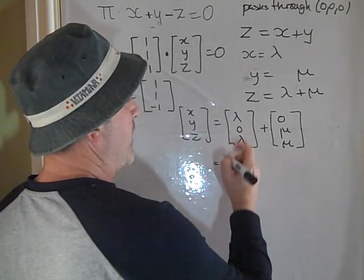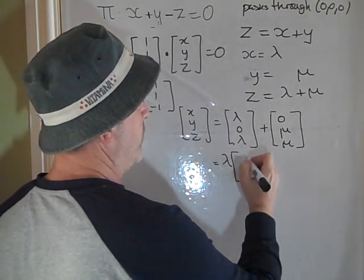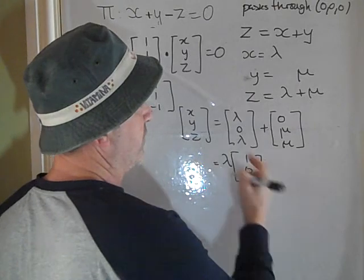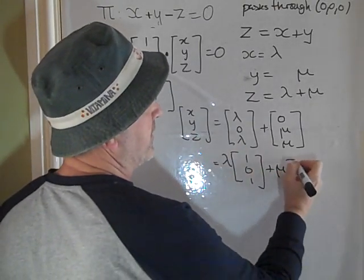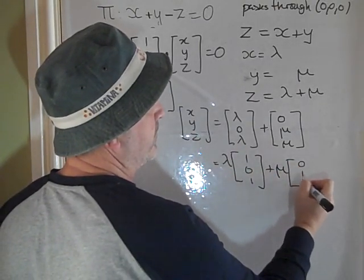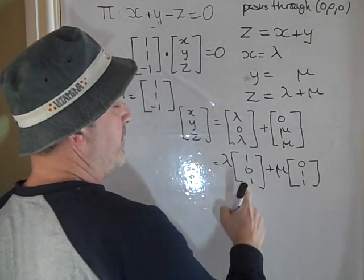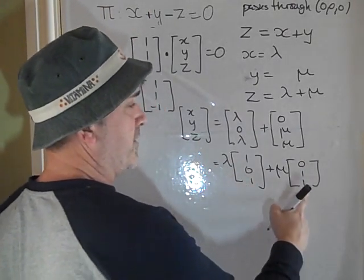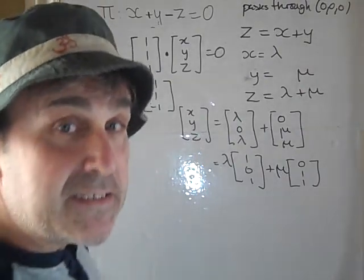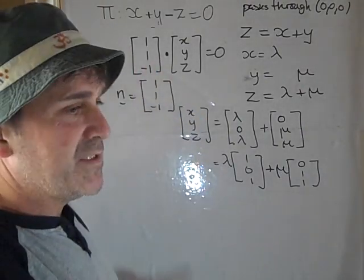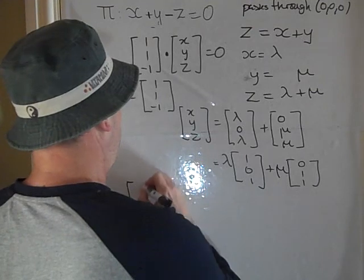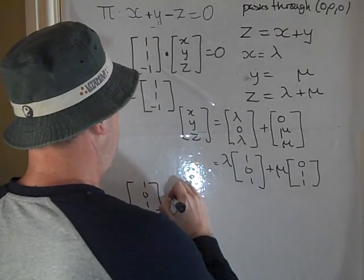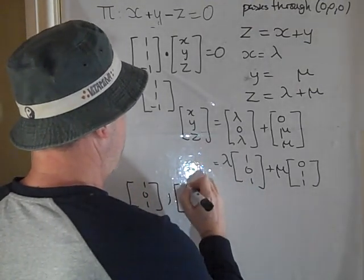So we can now write that as [1, 0, 1] by just taking lambda common factor and then we turn mu out. So that means that that vector and that vector are the basis of this plane or we say that those two vectors span. So we say that [1, 0, 1] and [0, 1, 1] span the plane π.